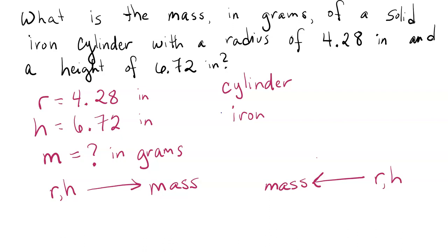If we have a radius and a height, and we know that it's a cylinder, it might make sense to find the volume first. And in that case, if we have a volume, and we are now looking for a mass, we can use the density of iron to find that.